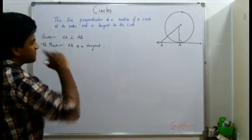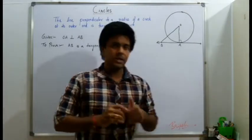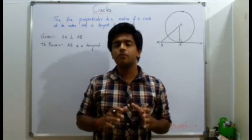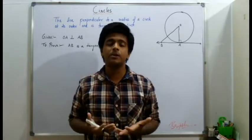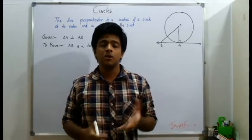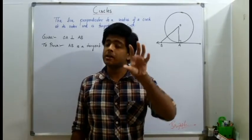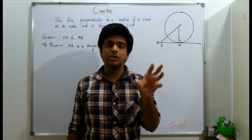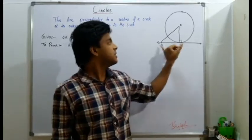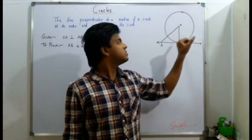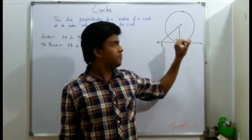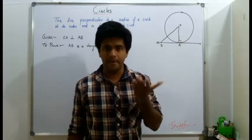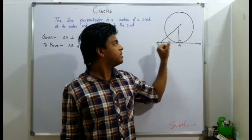Now, how we have to prove it is a tangent? To prove that we need to understand what exactly tangent is. Tangent ki exact property ya tangent ka definition kya hai. A tangent is a line which touches the circle externally at a single point, and it is perpendicular to the radius. Here we have this is perpendicular to AB.